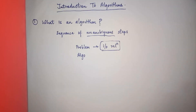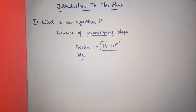All algorithms are meant to take in some inputs — at least one, though in some cases zero inputs can also be taken. The input which an algorithm takes corresponds to an instance of the algorithm. An instance is defined as a particular input that provides a particular output.